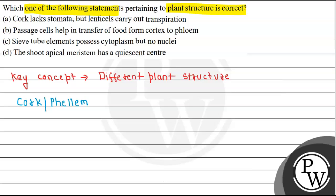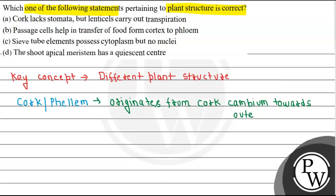Cork, or phellum, originates from cork cambium. It forms towards the outer side — cork cambium produces cork towards the outer side.